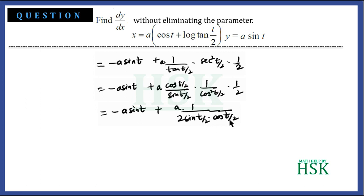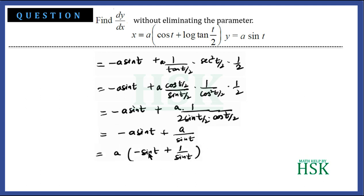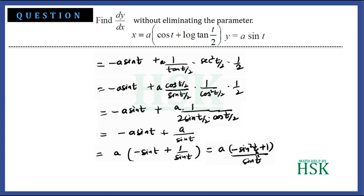Since 2 sin(t/2) cos(t/2) = sin t, this simplifies to a/sin t. So dx/dt = −a sin t + a/sin t. Taking a common and finding the LCM: a(1 − sin²t)/sin t. Since 1 − sin²t = cos²t, we get dx/dt = a cos²t / sin t.